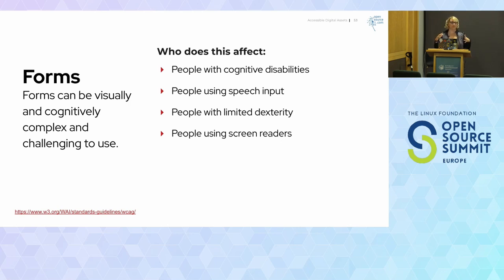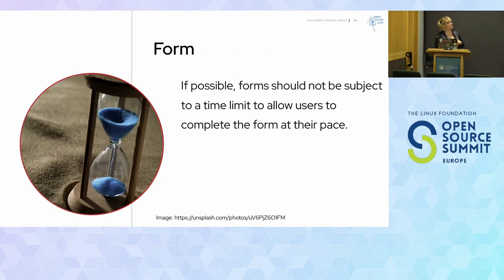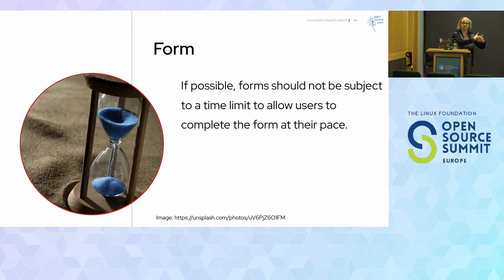People who use speech input can use labels via voice commands to navigate to specific fields they want to fill out. Folks with limited dexterity like palsy benefit from large clickable areas to activate controls, especially for smaller controls like radio boxes and checkboxes. People using screen readers identify and understand form controls because they're associated with labels read to them out loud. If possible, avoid time limits on forms — allow users to complete the form at their own pace. Not everyone is a dynamo at the keyboard; sometimes they need to get their credit card or do two-factor authentication.